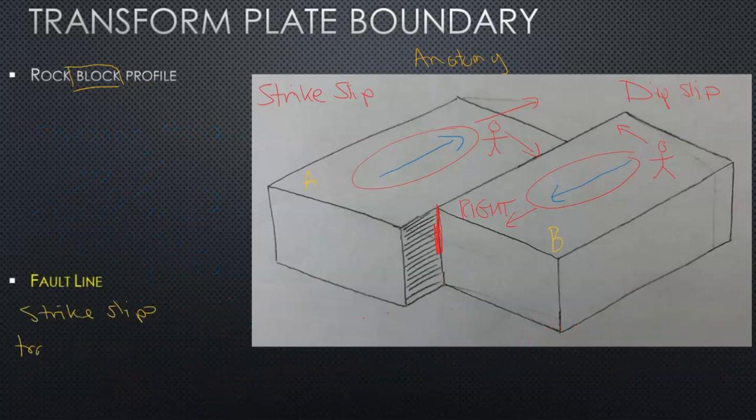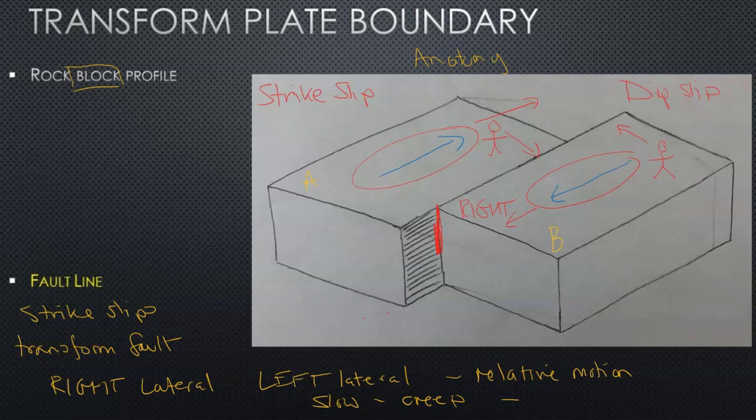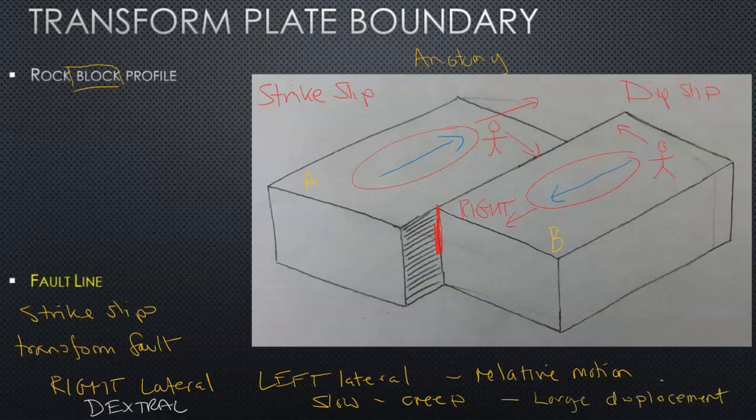Now, strike slips occur along a transform fault, as discussed. They can come in two types. There's right lateral and there is left lateral. And it's based on the relative motion of the plates. Now, these could be very slow and they creep and be more consistent, or they could only move in short periods of time over great distance. And that can also lead to large displacement. Now, the right lateral is called dextral, and this would mean that it goes from 90 to 180 degrees. Left is sinistral, and this goes from 0 to 90.